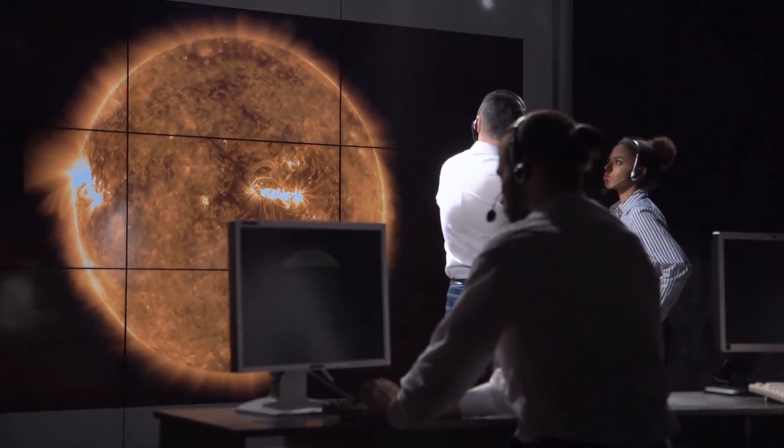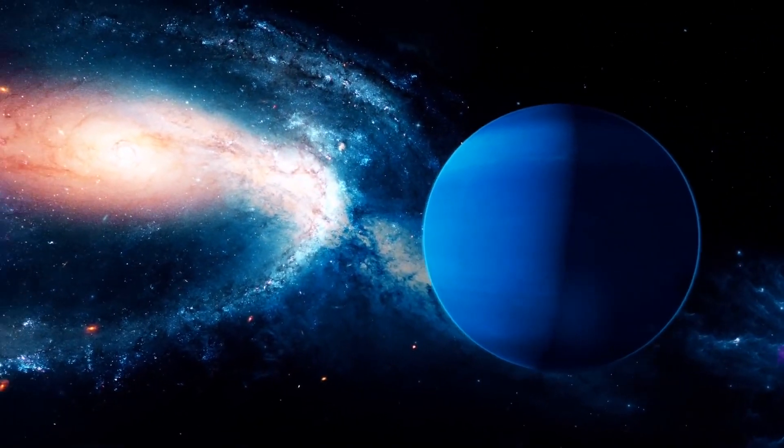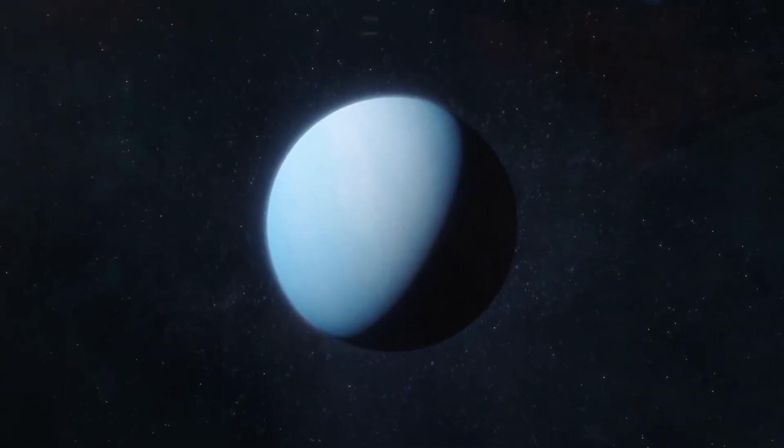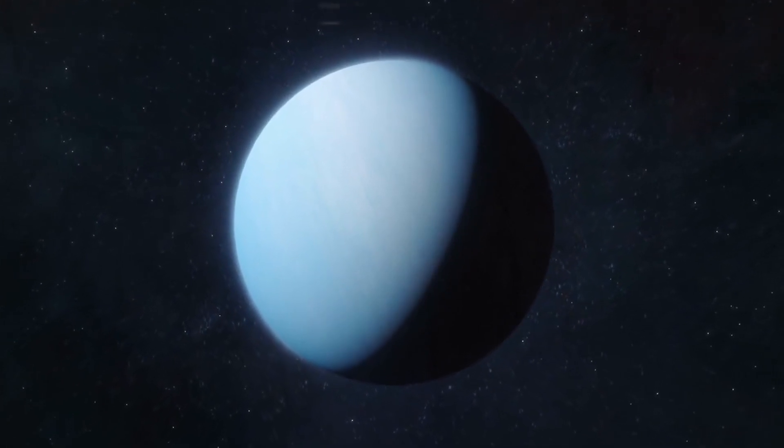What makes TOI 849b particularly weird though, is its strangely hybrid nature. While it's around the size of gas giant Neptune, it's dense and rocky, not gaseous.